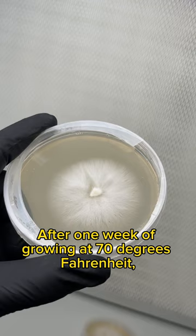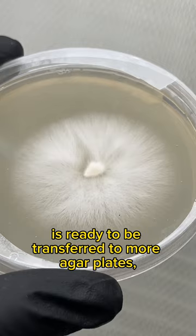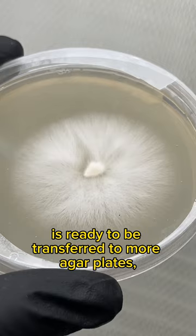After one week of growing at 70 degrees Fahrenheit the mycelium is ready to be transferred to more agar plates, to liquid culture, or to grain spawn to start the cultivation process. Thank you for watching and don't forget to follow for more videos.